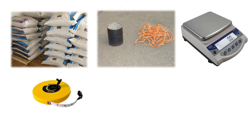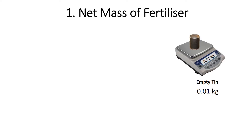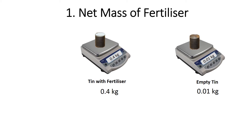We are now going to calculate the distance that a full tin of fertilizer must cover. It doesn't matter what size tin you use — this calculation will work for any tin of any size. Start by calculating the net mass of fertilizer in the tin. You do this by weighing the empty tin first, then filling it with fertilizer and weighing it again. The net mass will be the difference between these two.